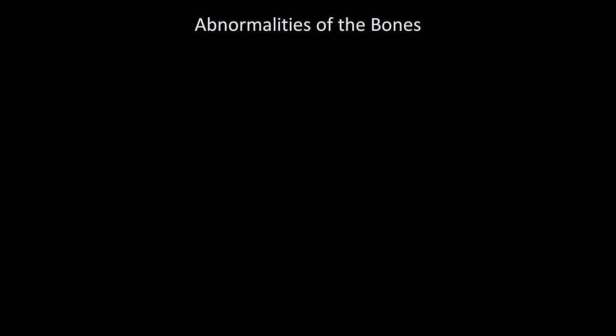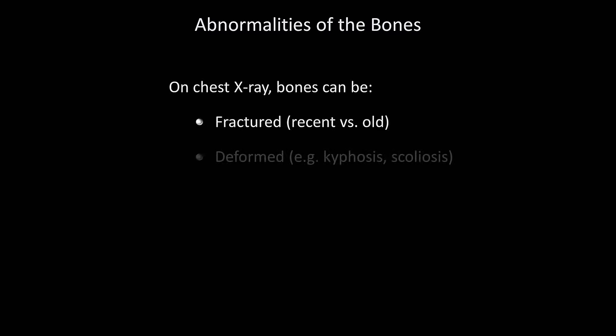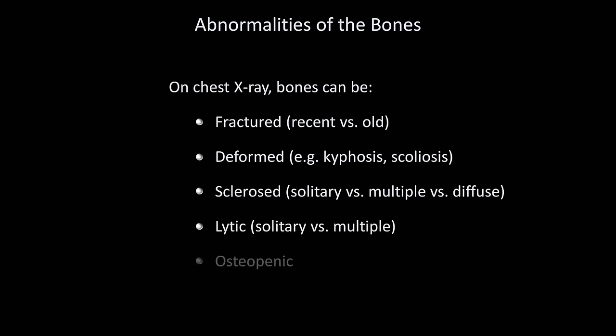Let's move on to bones. On chest x-ray, bones can either be fractured, deformed, sclerosed, lytic, osteopenic, or notched — which applies just to ribs. Identifying osteopenia on a chest x-ray is very difficult; I don't recommend doing that unless you are an experienced radiologist, and I won't talk about it more here.